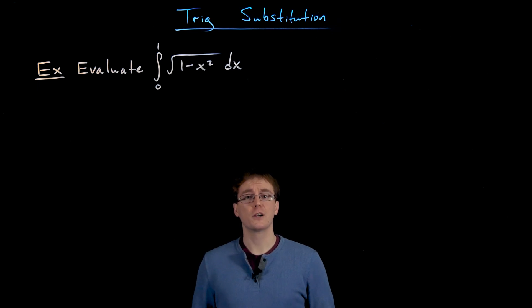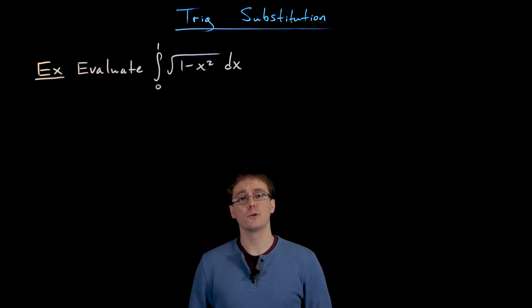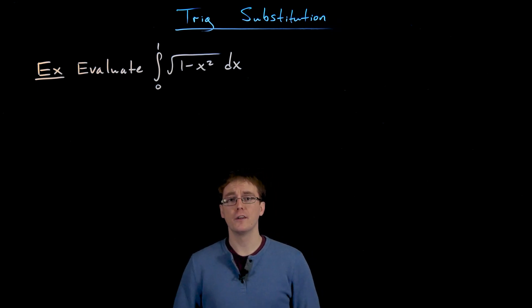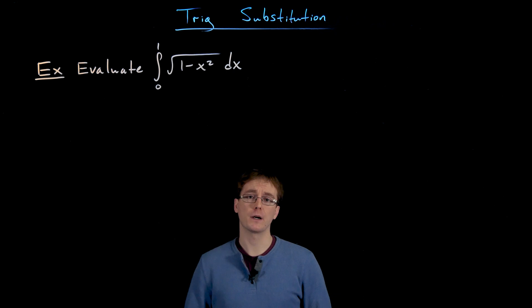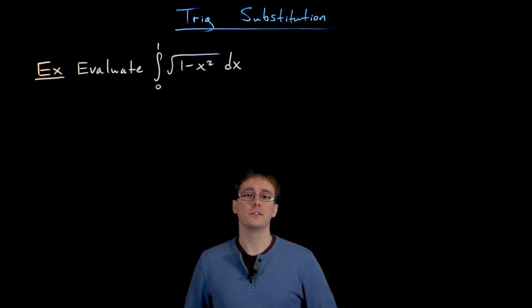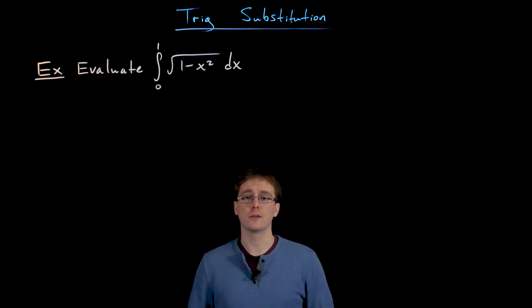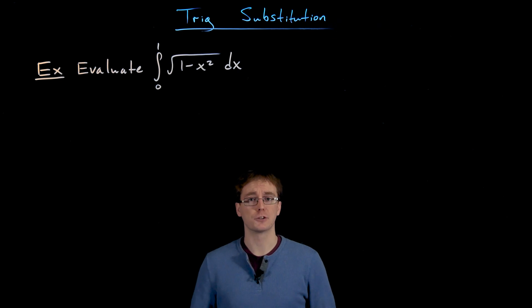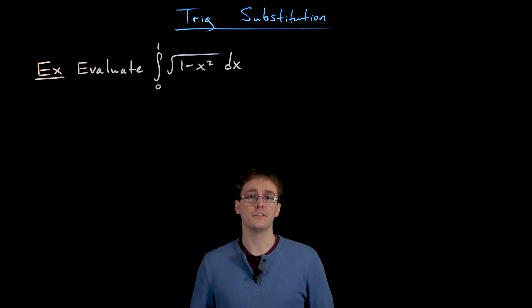Our first example asks us to evaluate the definite integral from 0 to 1 of the function the square root of 1 minus x squared. We are going to use trigonometric substitution to evaluate this integral algebraically, but first let's go ahead and do it graphically.